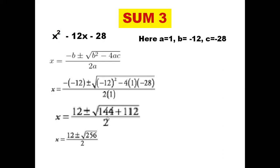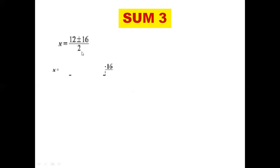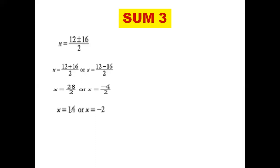So we have 12 ± 16, divided by 2. Solving: 12 + 16 = 28, divided by 2; or x = (12 - 16) / 2. So 28 / 2 = 14, and (12 - 16) / 2 = -4 / 2 = -2. So x = 14 or x = -2. This is how we solve the quadratic equation by using the formula.